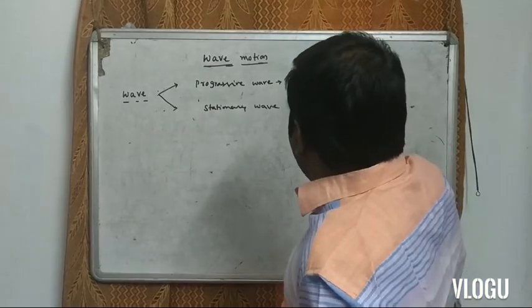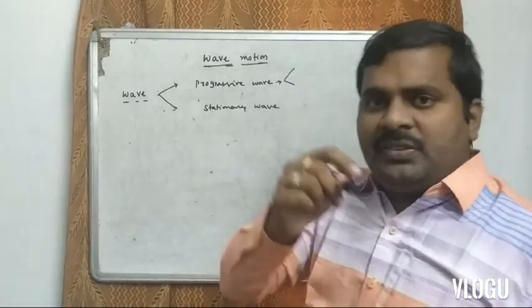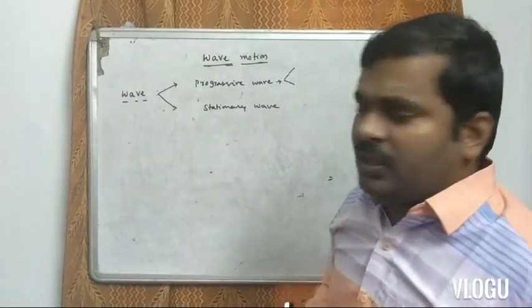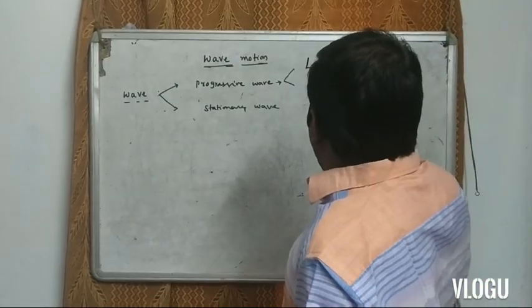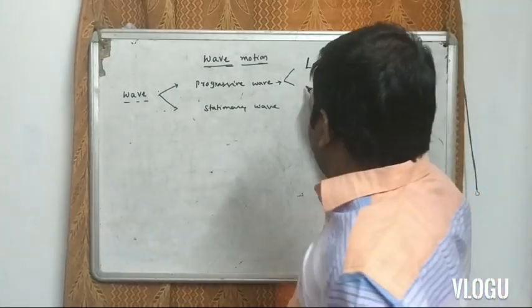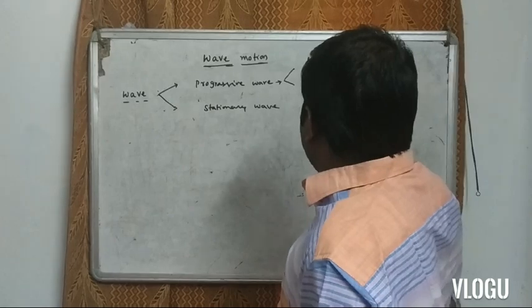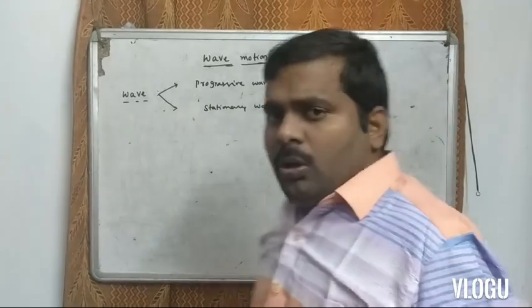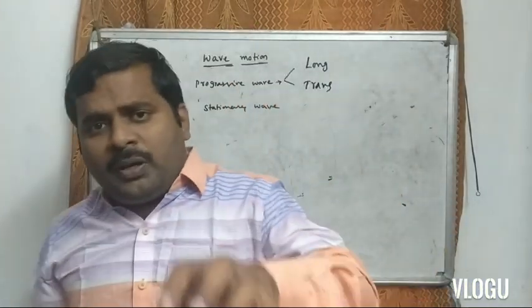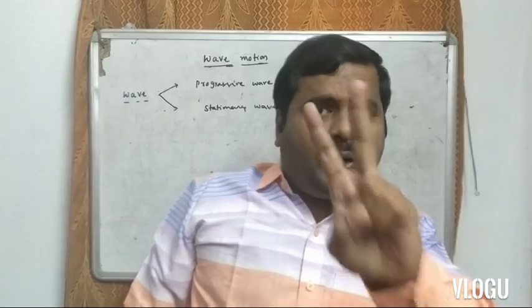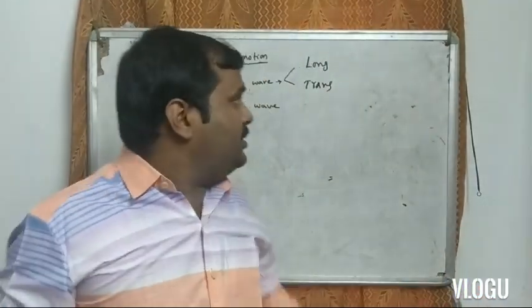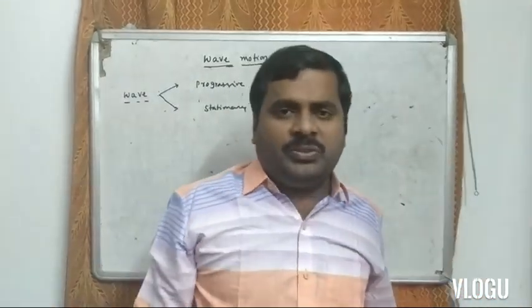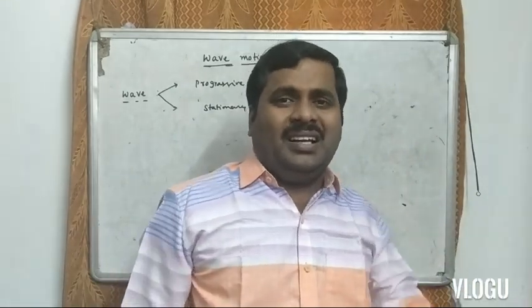How many types of progressive wave are there? Progressive waves are two types. The first one is longitudinal wave, and the second one is transverse wave.